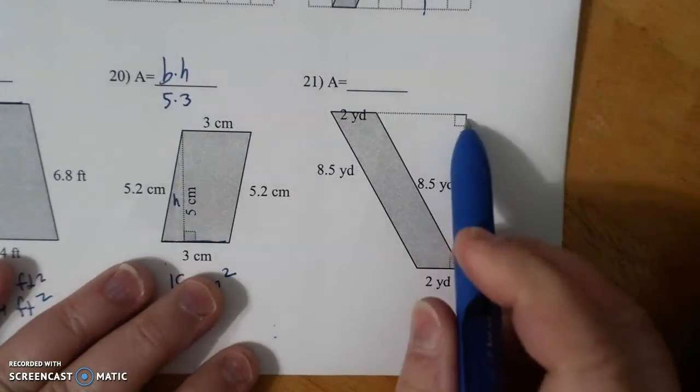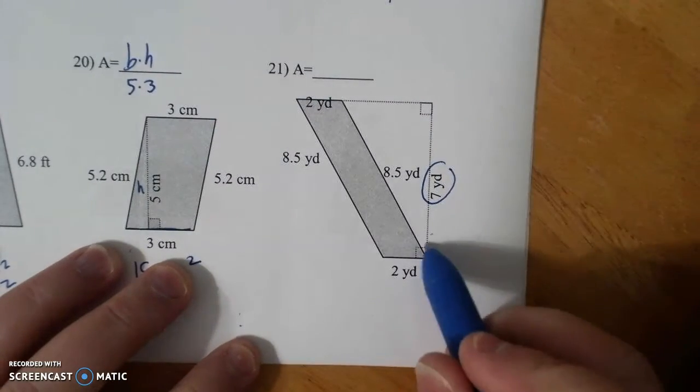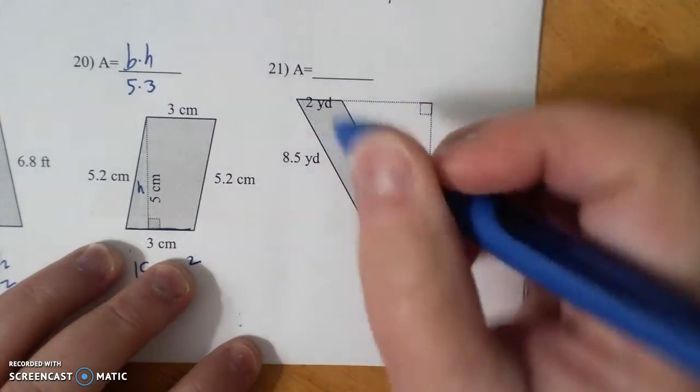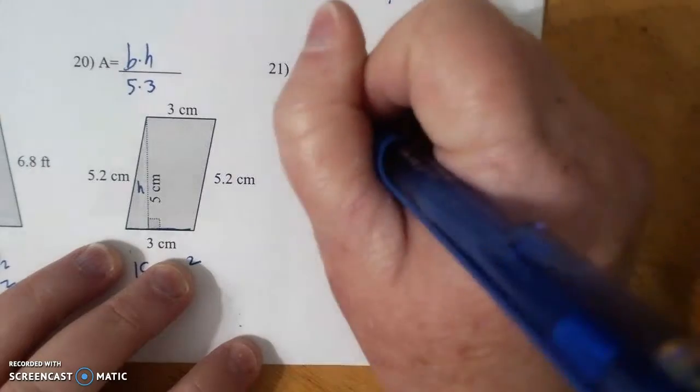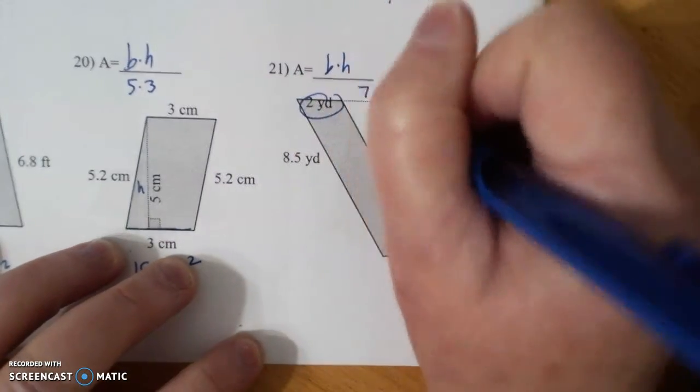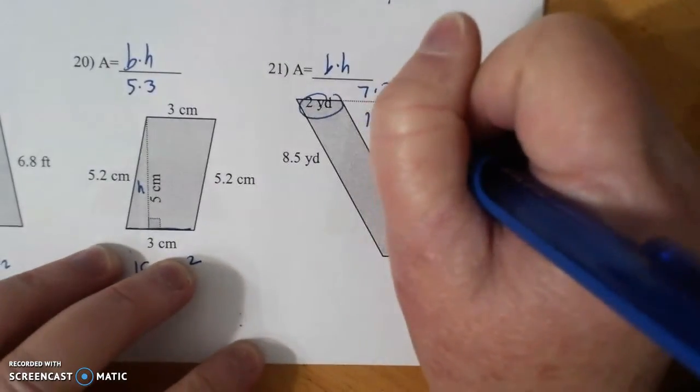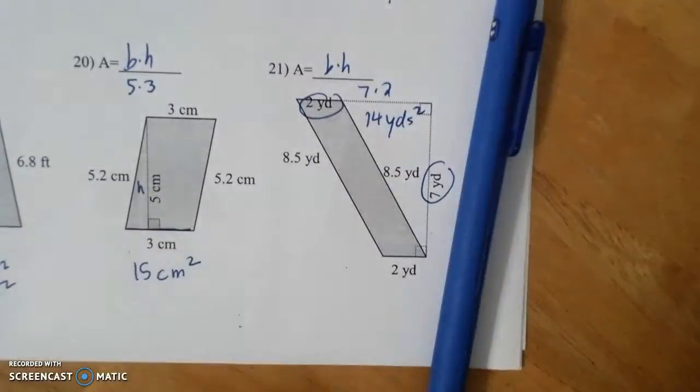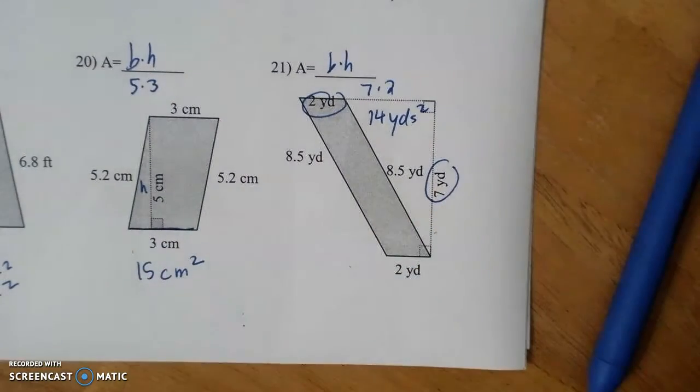Find your perpendicular. That's your height. Perpendicular to 2. So base times height is 7 times 2, which is 14 yards squared. And that is how you find the area of parallelograms.